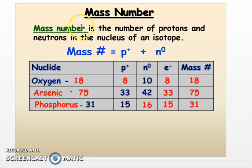Now mass number. The mass number on the periodic table is the number of protons and neutrons in the nucleus. So that means if you want to figure out the number of neutrons, you'd have to take your mass number and subtract the number of protons.